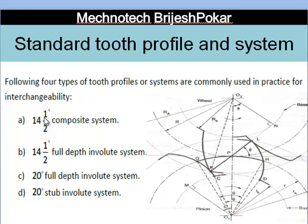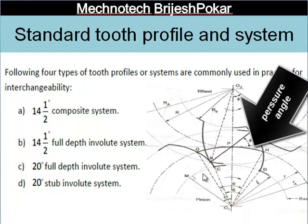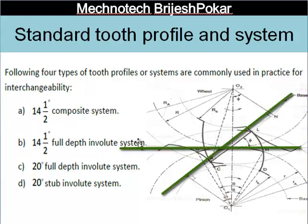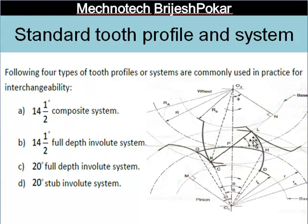There are four standard tooth profiles: the 14.5 composite system, 14.5 full depth involute system, 20 degree full depth involute system, and 20 degree stub involute system. The 14.5 and 20 degree values refer to the pressure angle — the angle between the common normal (MN line) and the common tangent.